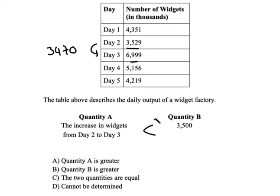But not so fast. Did you pay attention to the description of the table? Well, maybe you didn't. If we're talking about the number of widgets in thousands, then we need to add three zeros to each one of these numbers. And that means that the difference is actually 3,470,000. And so quantity A is, in fact, much larger.